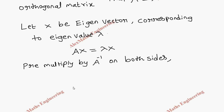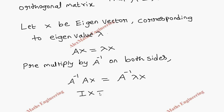So here we get A inverse into A times X equal to A inverse into lambda X. Now A inverse into A becomes I, then X. Since lambda is a constant, we can write it at the start of the term, giving lambda into A inverse into X.